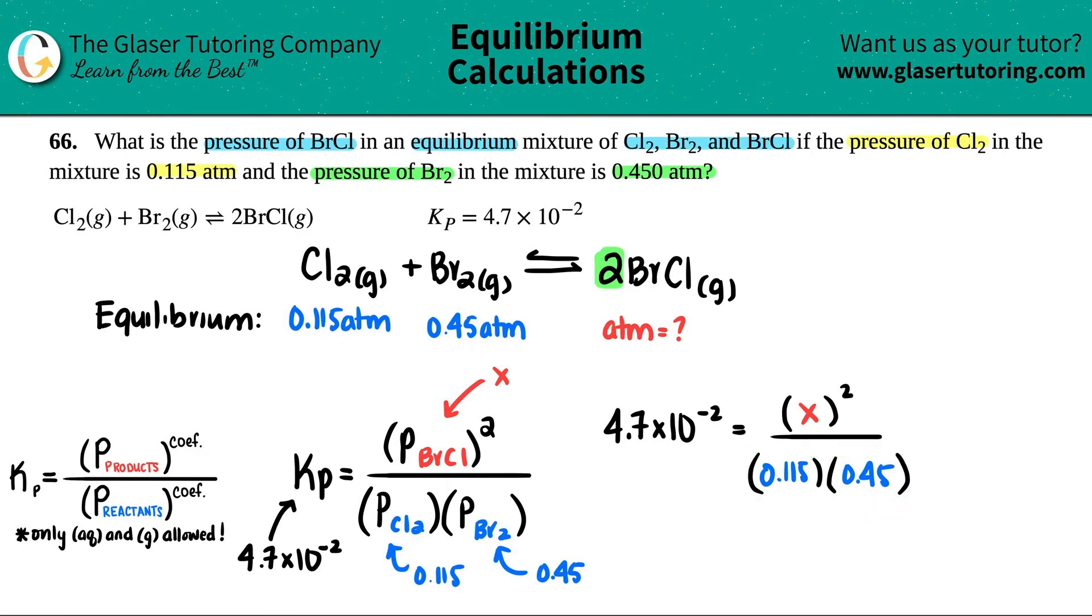So 4.7 × 10⁻² times 0.115 times 0.45. Try not to round here because we're not at the final answer. I'll put x squared first: x² equals 0.00243225.